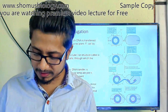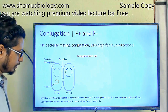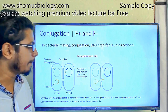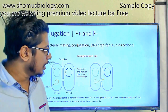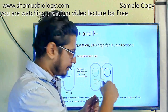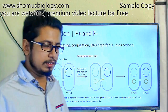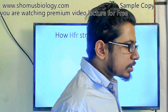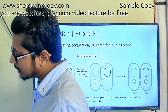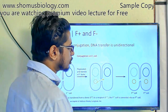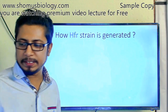Looking at the conjugation process in detail: the chromosomal DNA is shown for both F+ and F- cells. Transfer of the plasmid begins via rolling circle replication. Rolling circle mode is used because it allows the DNA to be unwrapped, become linear, and be transported through the channel. At the end of the process, the F- cell is converted to F+. At the conclusion of conjugation between F+ and F-, both cells are F+.